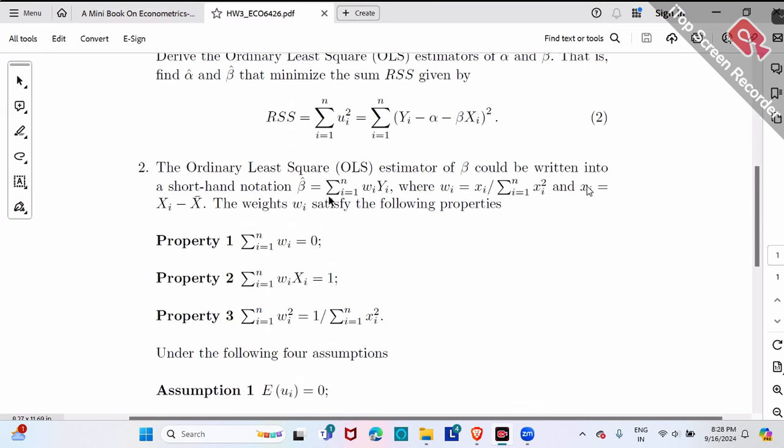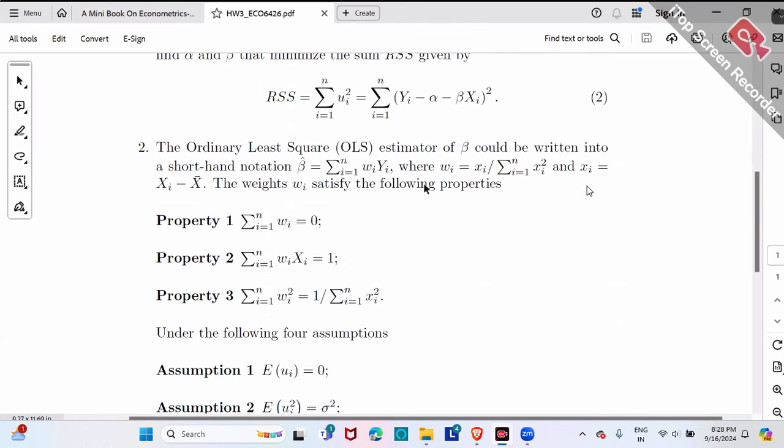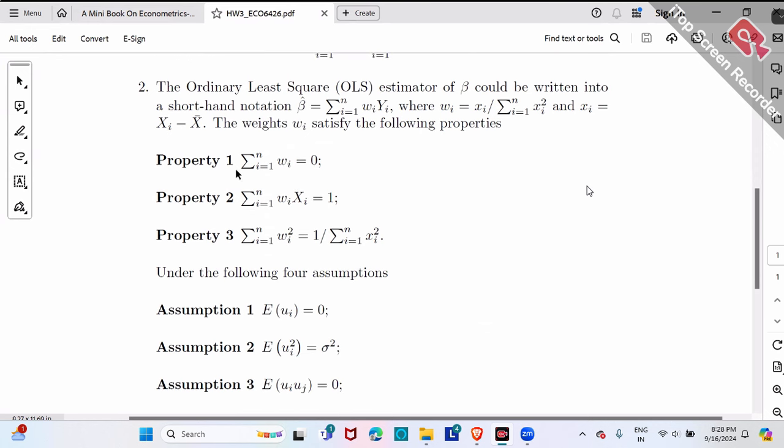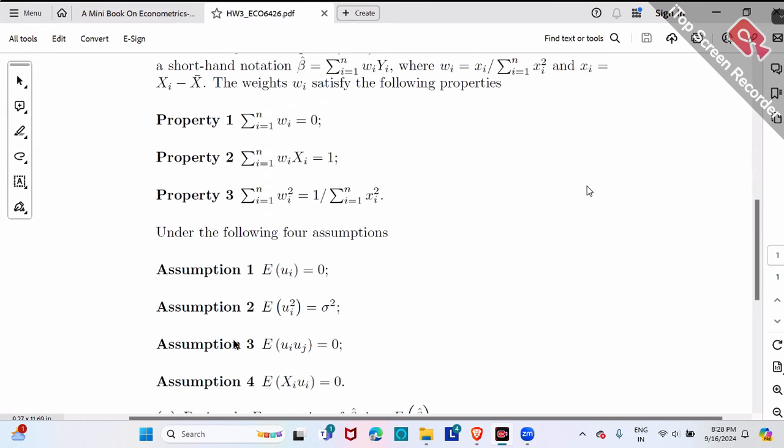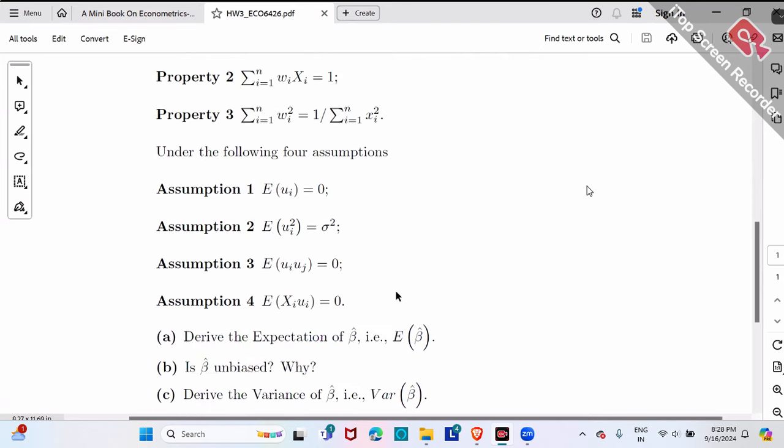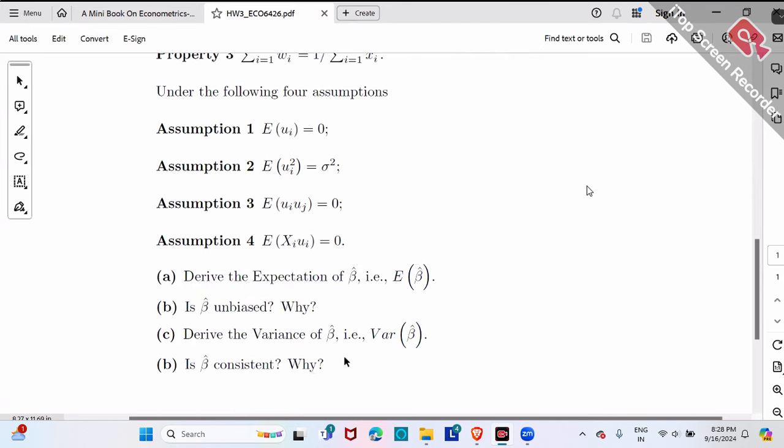Second proof is starting from this shorthand notation, beta hat is W_i Y_i, starting from this formula, where W_i, little X_i, these are given. And all three properties and four assumptions are given.